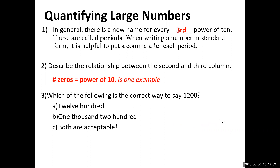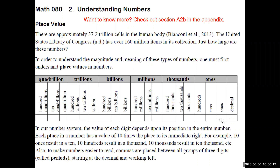Which of the following is the correct way to say 1,200? Both '1,200' and 'twelve hundred' are acceptable. Americans usually use '1,200.' These are the various groups of numbers and we will be talking about place values.